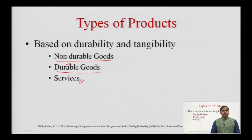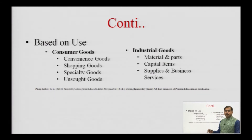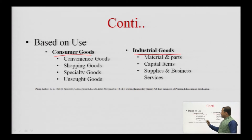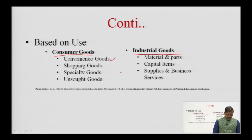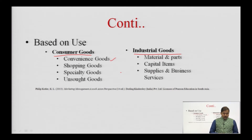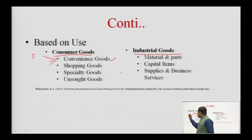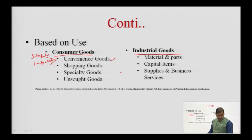Now let us look at the next classification of products, which is based on use. Based on use, products are classified as consumer goods and industrial goods. Consumer goods include convenience goods — those which are bought more frequently, immediately, and with minimal effort. They are low priced and readily available at many purchase locations. Convenience goods are further classified into three types: staple goods, impulse goods, and emergency goods.